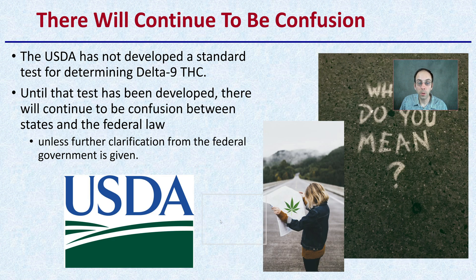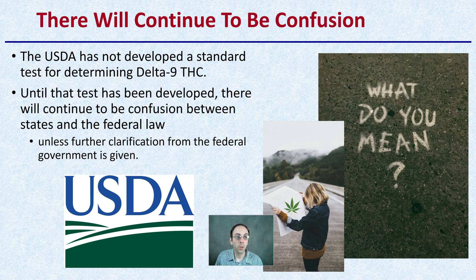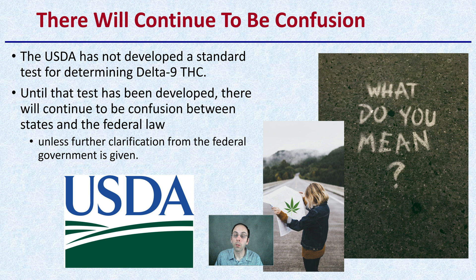So there will sadly continue to be confusion. The USDA has not developed a standard test for determining delta-9-THC, and as we saw, decarboxylation and HPLC do yield slightly different results. Until a standardized test is developed, there will continue to be confusion between states and federal law unless further clarification from the federal government is given. Hopefully this provided some detail on the science behind the confusion and the potential different interpretations of the 2018 Farm Bill defining hemp.